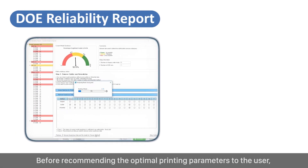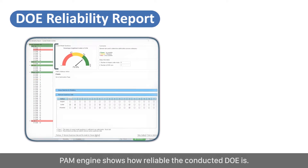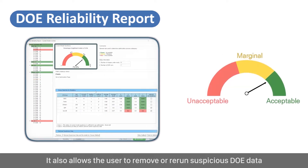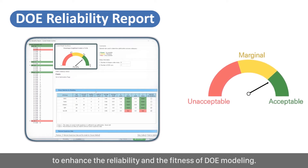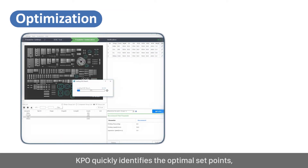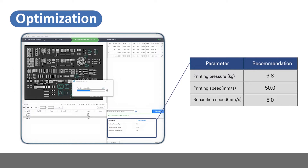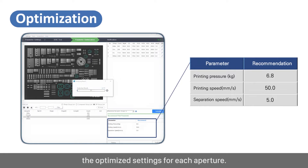Before recommending optimal printing parameters to the user, the PAM engine shows how reliable the conducted DOE is. It also allows the user to remove or rerun suspicious DOE data to enhance reliability and the fitness of DOE modeling. With 15 years of expertise processing 3D big datasets, KPO quickly identifies the optimal set points and then adjusts the parameters using AI. PAM then shows an analysis with results to configure the optimized settings for each aperture.